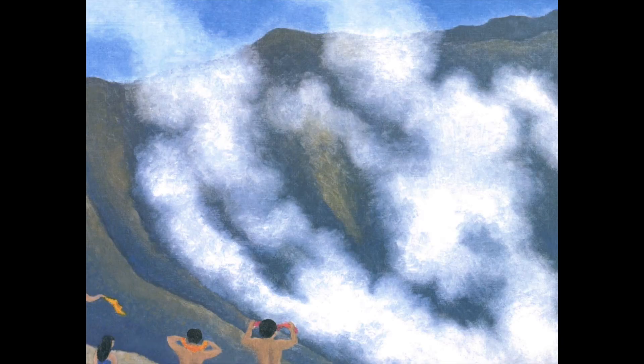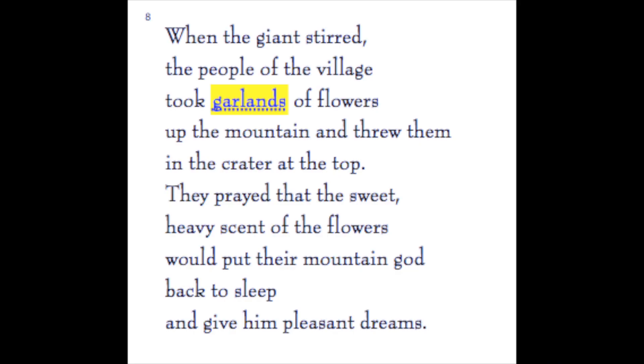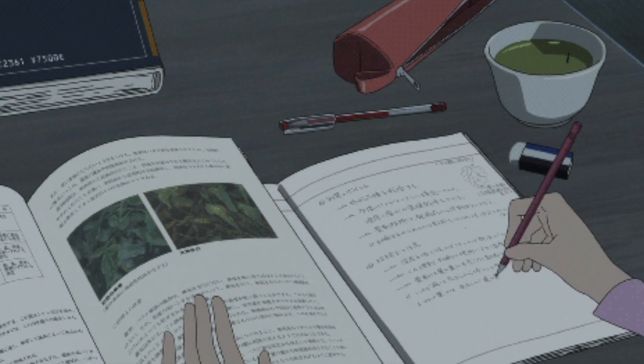The author doesn't exactly tell us how the people felt when the giant stirred — meaning the mountain started to move — but let's use the illustration and text evidence to make an inference. Why would they pray for the mountain to go back to sleep? What might they be feeling — happy? Thankful? Nervous? Worried? Please write down an inference on what the people may be feeling and how you know this in your notebooks.